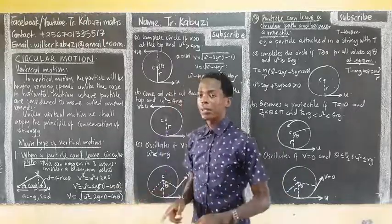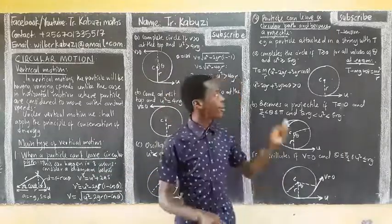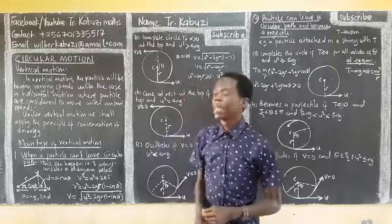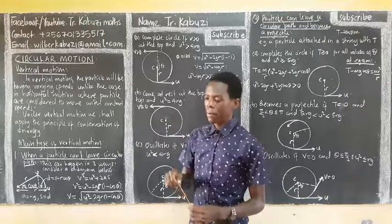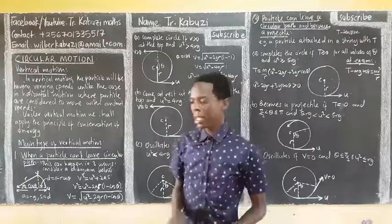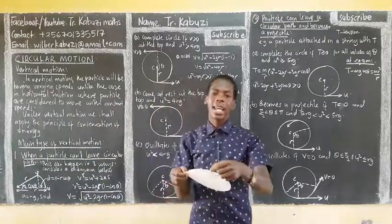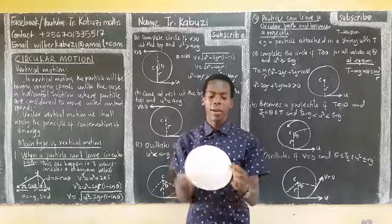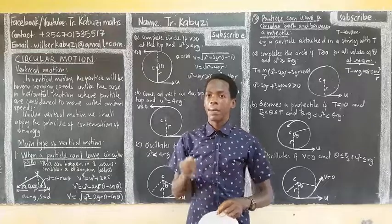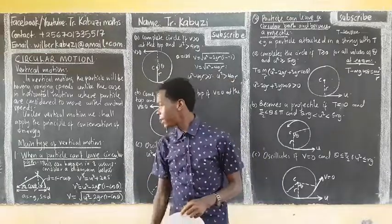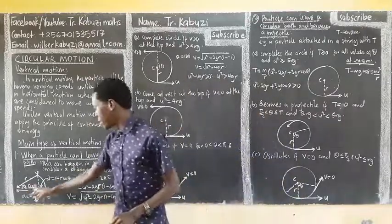We have basically two types: when the particle is kept in a circular path, and when it cannot be in a circular path. In the first case, the particle can't leave the circular path. For example, if I have a circular ring and I tie a particle to it and rotate it around, the particle can never leave. That's one case, and this can happen in three ways. But before we go back, let us consider this diagram.